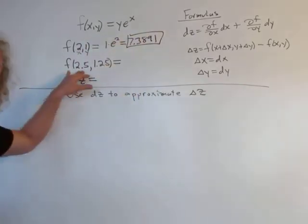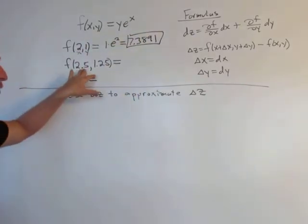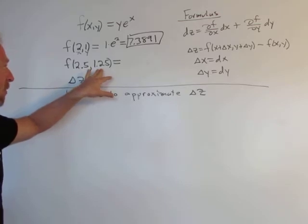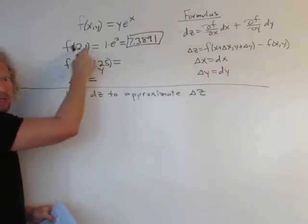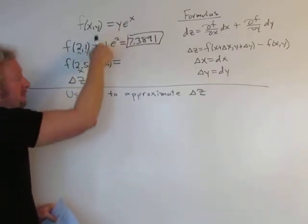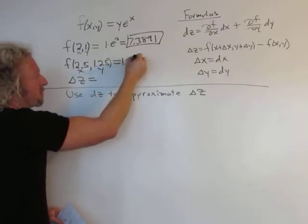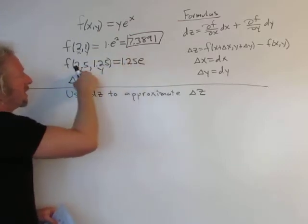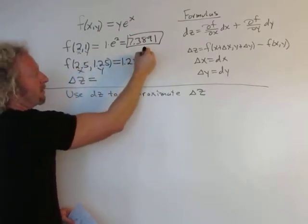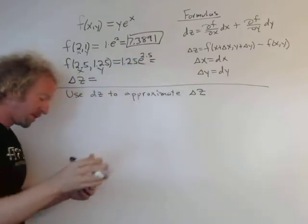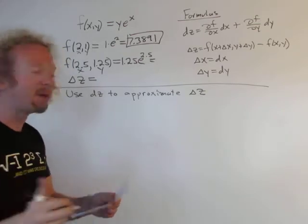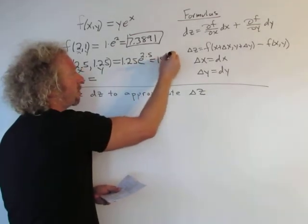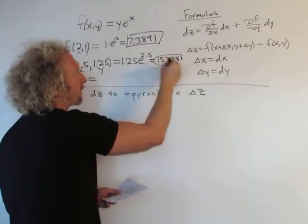The second part wants us to evaluate f of this ordered pair (1.25, 2.5). Be really careful when you plug them in because y is first. So it's 1.25, that's the y, and x is 2.5. If you work this out using a calculator—I did this ahead of time—I got 15.2281. I'm using four decimals.